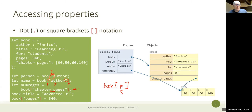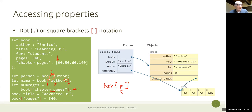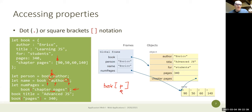Alessandro asks if we may have objects inside objects. Yes — the property of an object can be anything. In this case the property 'chapter pages' is an array, but it may also be an object — there's no limit. The square bracket notation allows using objects as associative arrays, mapping any string to a value. We can think of them as objects in object-oriented programming, or just as a data structure for storing values with arbitrary keys.